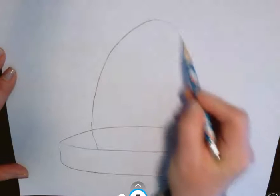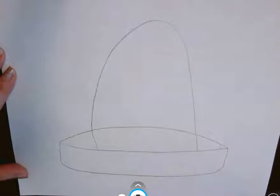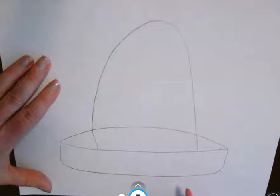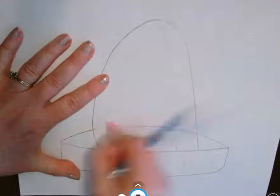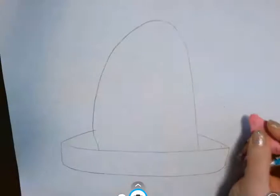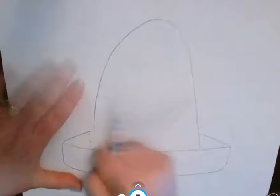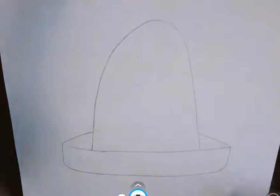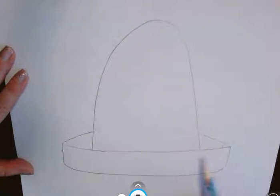All right, then you want to erase some lines, maybe the back line here, just get rid of it, just erase it. So it's almost like the top of the hat and you can just see the sides around there.